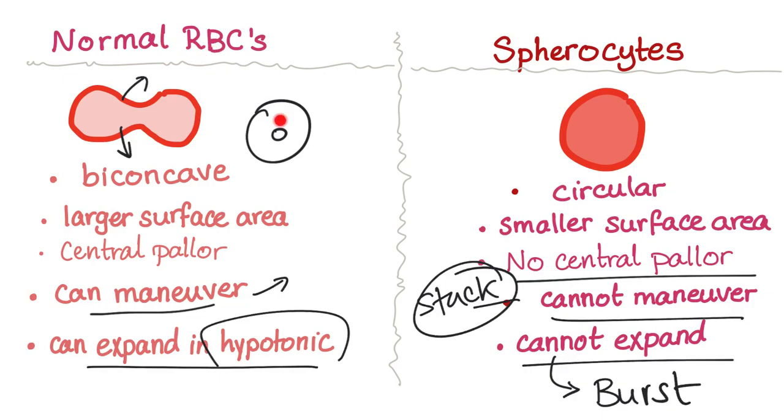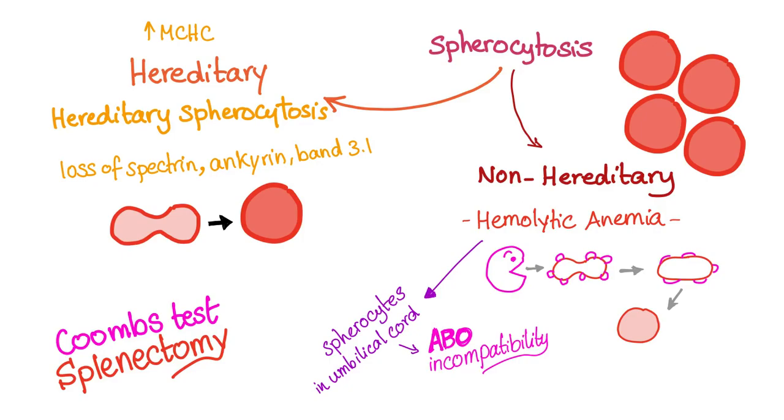Remember: normal red blood cells have central pallor, like a donut. The spherocyte looks like an apple pie — no central pallor.